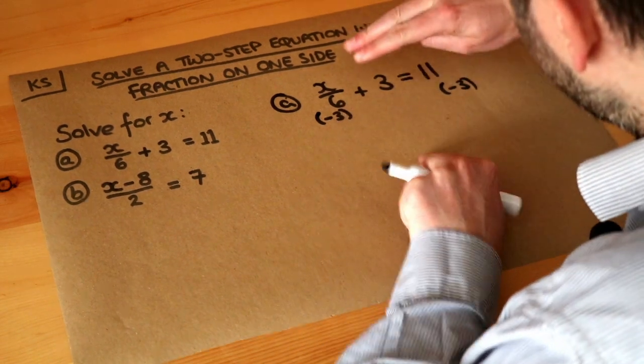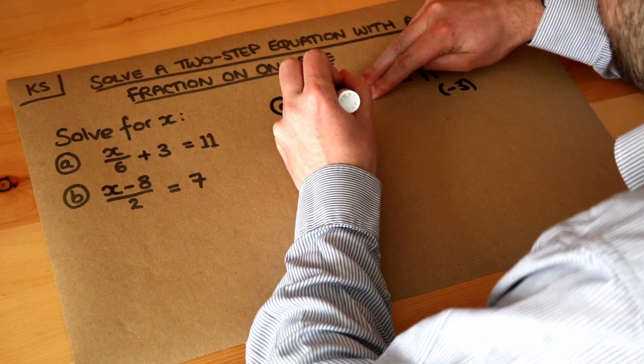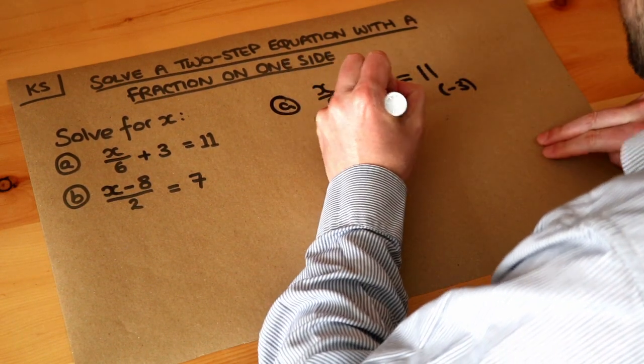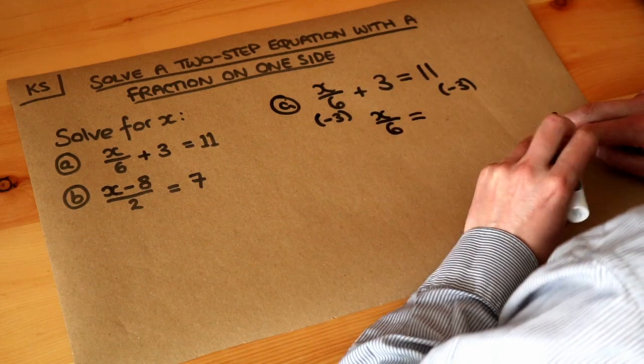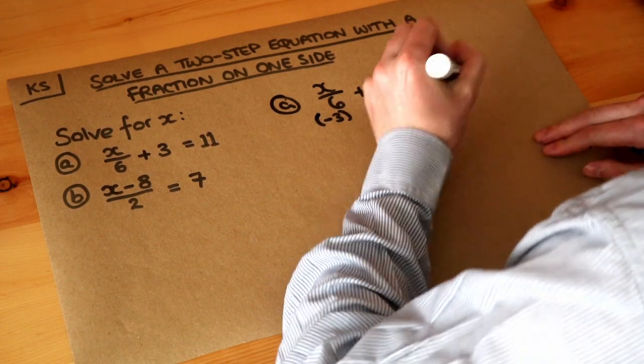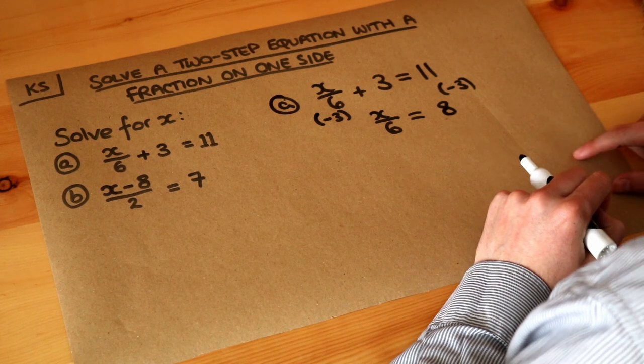Now the minus 3 just cancels out that plus 3. So we're just left with the x over 6. And on the right-hand side of the equation, 11 minus 3 is equal to 8. And now we've got a slightly simpler equation.